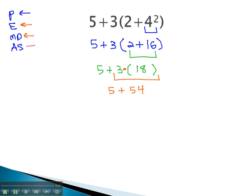Finally, at the end, we'll do our addition and subtraction. 5 plus 54 is 59, and we have our solution.